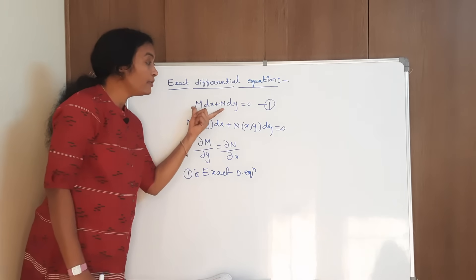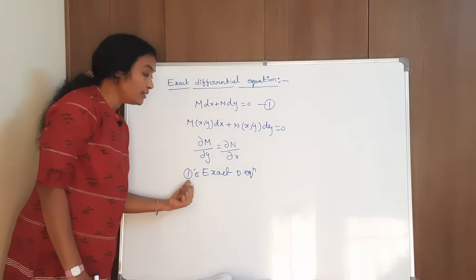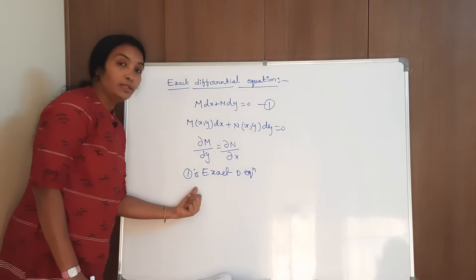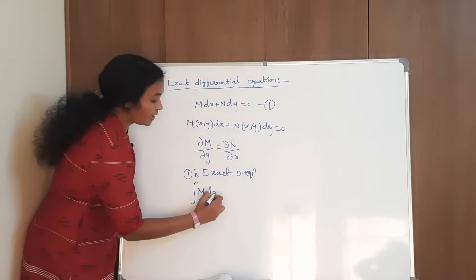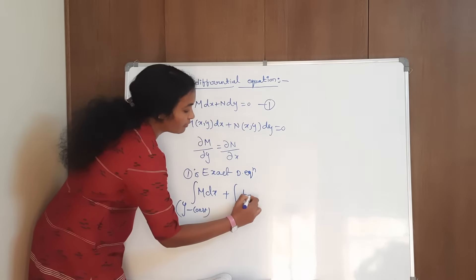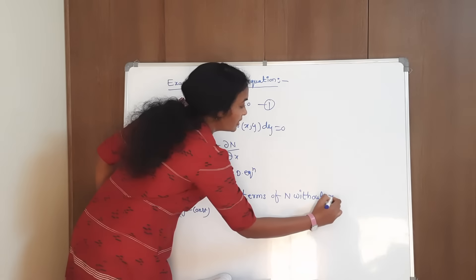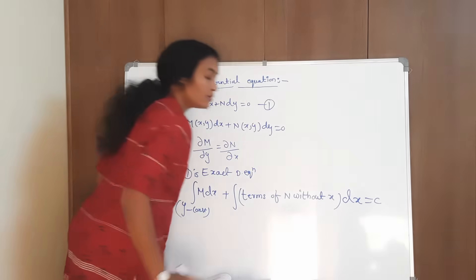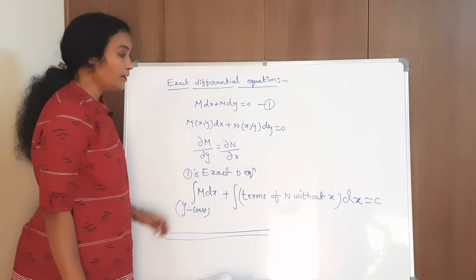The equation in the form of Mdx + Ndy satisfies ∂M/∂y = ∂N/∂x condition, then you can say that that is the exact differential equation. If it is exact, we are going to solve the solution. The solution is: integral of M dx (y is constant) plus integral of terms of N without x, dy = c. This is the solution of the exact differential equation.